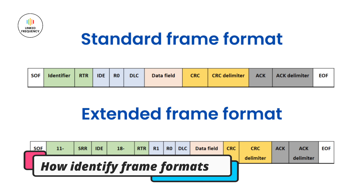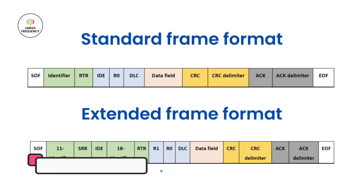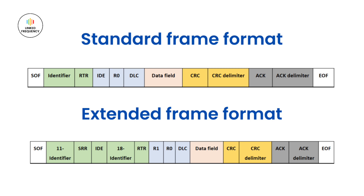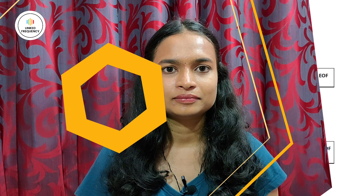There might be a question: how to identify whether it is a standard frame format or an extended frame format? There are different ways. First, through the identifier — if it is an 11-bit identifier, it is standard format; if it is a 29-bit identifier, it is extended format. Second, through the IDE — if IDE is dominant, it is standard format; if IDE is recessive, it is extended format. If both formats are transmitting together, the standard frame format will have higher priority. This was all about understanding the standard and extended format of CAN. Thank you for watching.